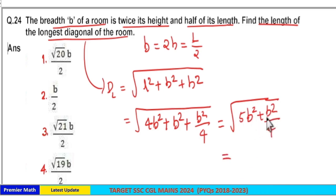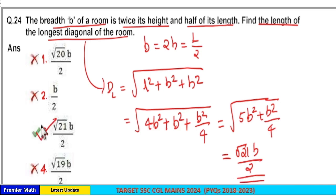20B square plus B square is 21B square. So this is 21B square by 4, means square root of 21B by 2. Option 3 is your answer. The longest diagonal is equal to root 21B by 2.